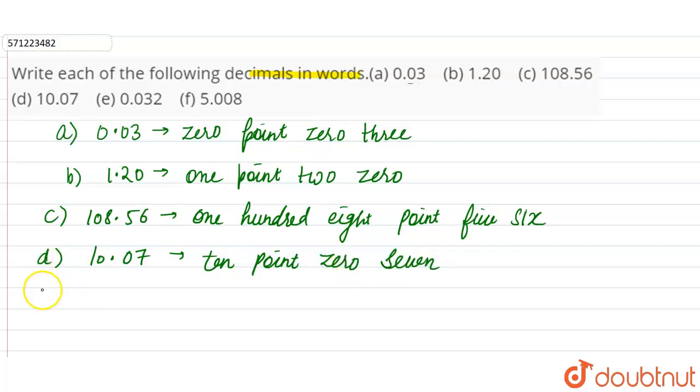Then E part, E part is 0.032. So this is zero point zero three two.